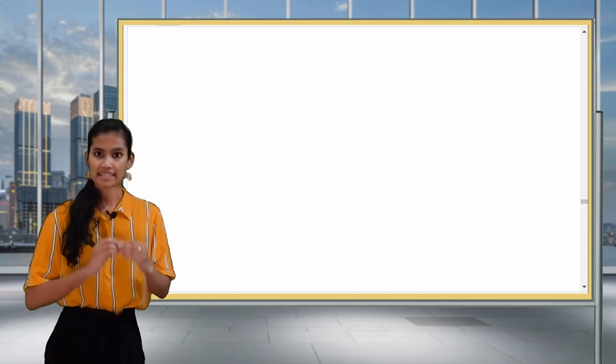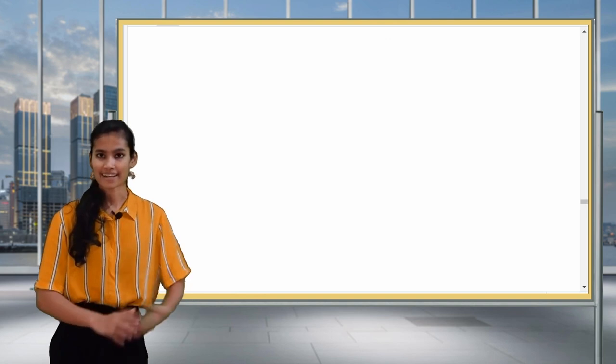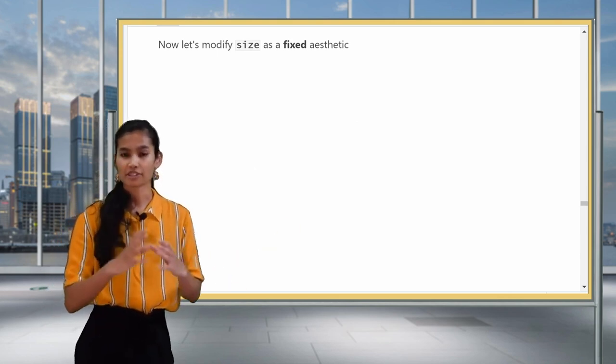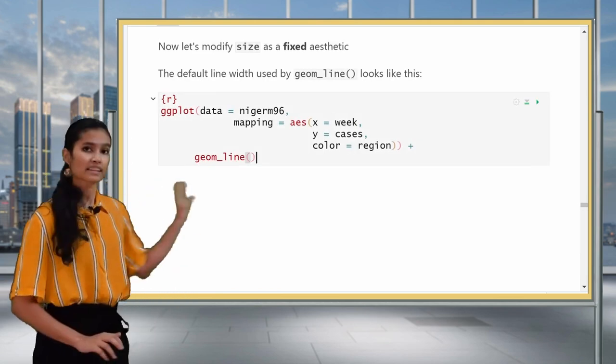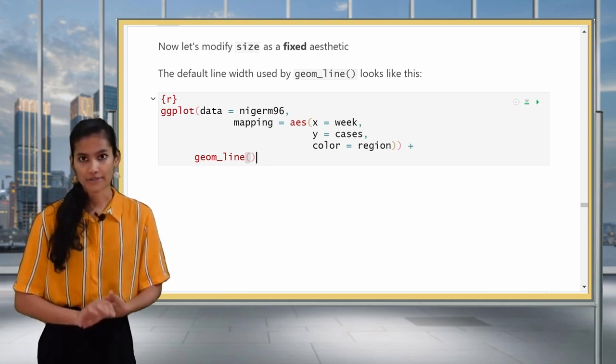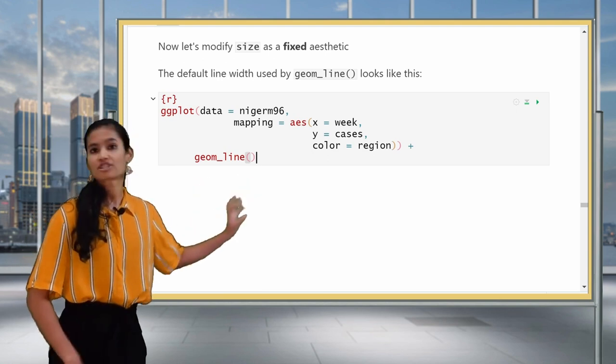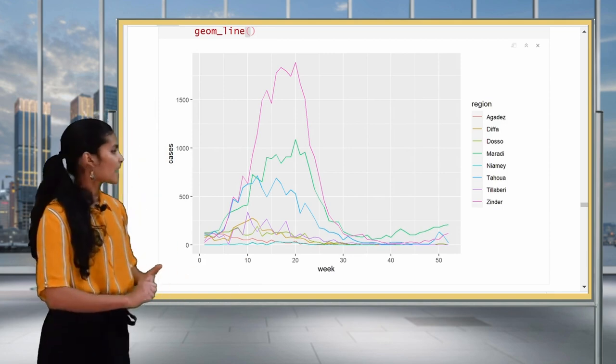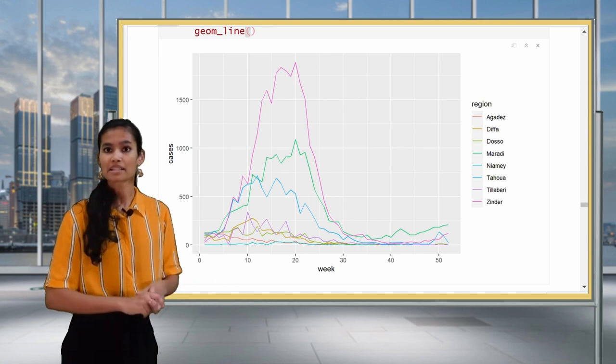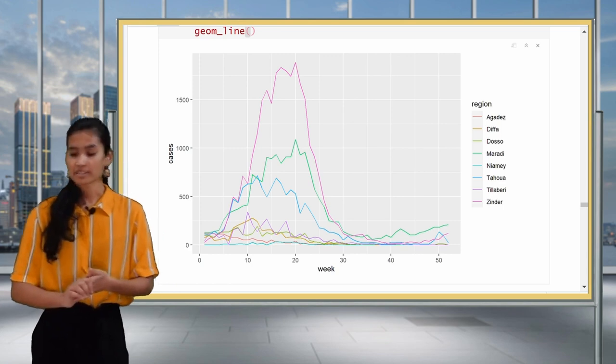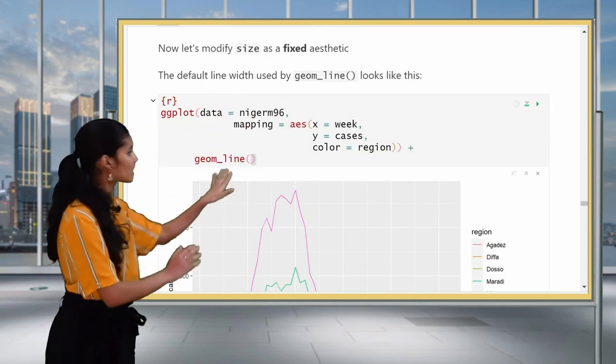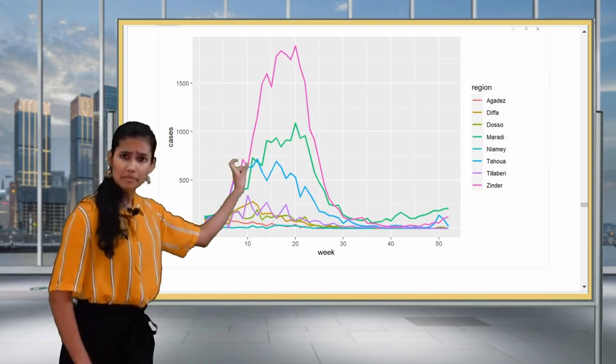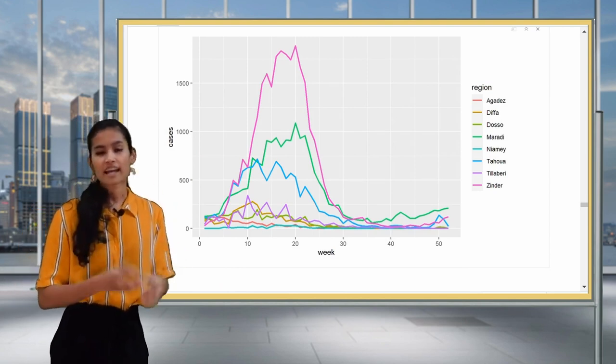Now we've used color as both an aesthetic mapping and as a fixed aesthetic. Let's explore a new aesthetic called size. The size aesthetic does exactly what you might think it does. It controls the size of the geometric object. We can change the size of points, but let's visit the line graph to see how line width can be controlled by using size. So first, I'm going to run it without any fixed aesthetics to just see what the size looks like by default. And the lines are pretty thin. The default here being used is 0.5 millimeters. So let's double the size of that and set it to 1 millimeters. So now that we've run this code, you can see that the lines are a little bit thicker than they were before.